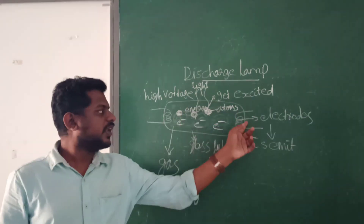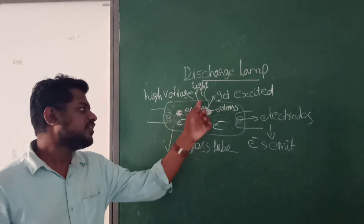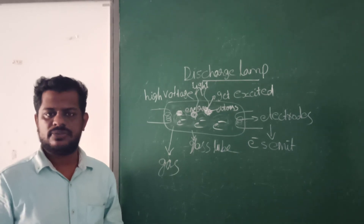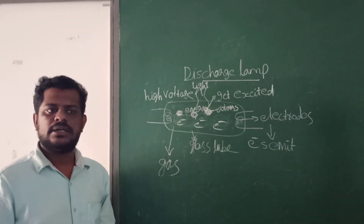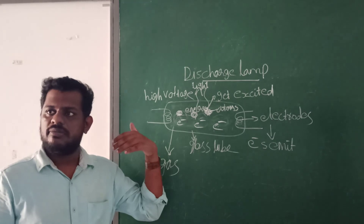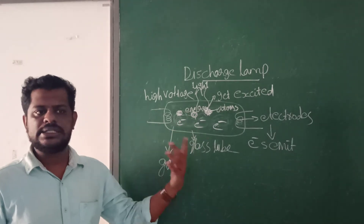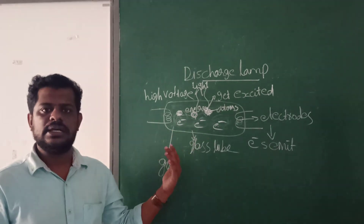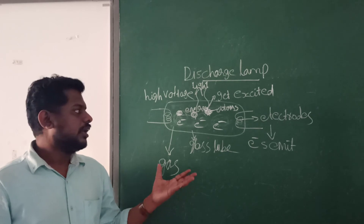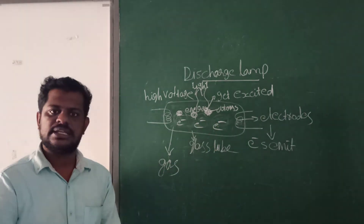We can get different colors of light from a discharge lamp. The color of the light depends on the gas filled inside the glass tube. If sodium vapor is filled inside, we get yellow light. If mercury is filled inside, we get pure white light. Neon gives orange-red light, hydrogen gives blue light, and nitrogen gives red light. So the color of the light from a discharge lamp depends on the gas filled inside it.